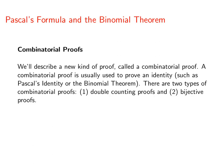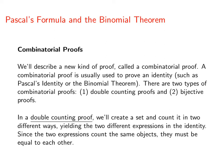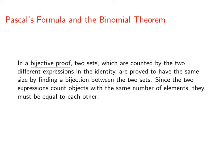There are two types of combinatorial proofs: double counting proofs and bijective proofs. We're probably going to see a lot more double counting proofs than bijective proofs. In a double counting proof, we create a set and count it in two completely different ways — two different perspectives — yielding two different expressions in the identity. The two expressions count the same objects, so they must be equal. In a bijective proof, we take two sets counted by two different expressions and prove they have the same size by finding a bijection between them. Since both expressions count objects with the same number of elements, they must be equal.